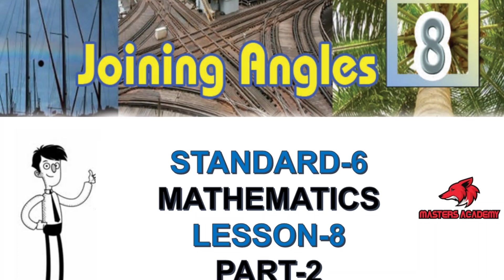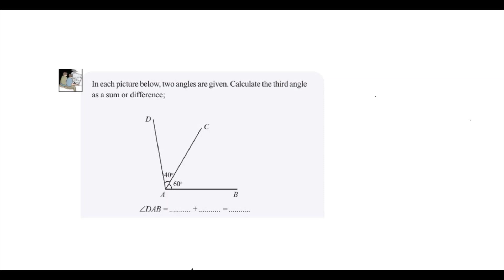Hello friends, welcome to our channel Monsters Academy. Today we are going to discuss about the eighth chapter of classics, that is joining the angle. In the picture below, two angles are given. Calculate the third angle as the sum or difference.